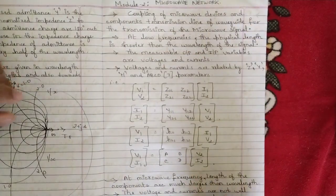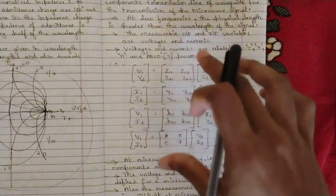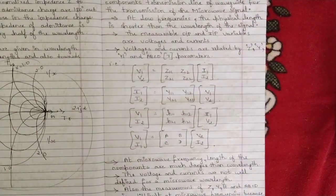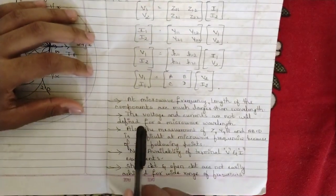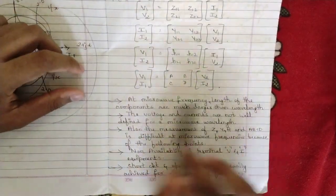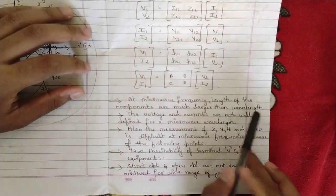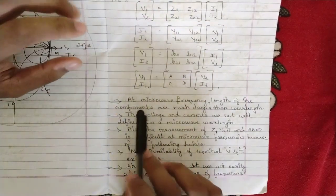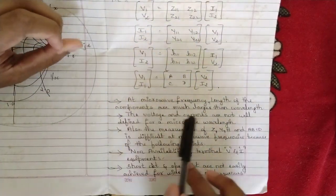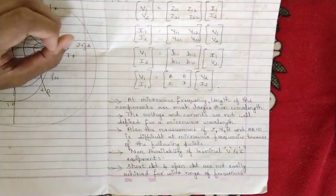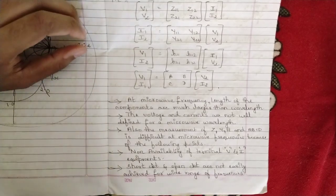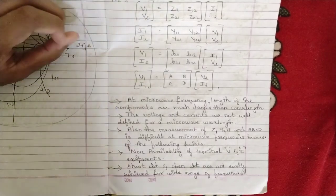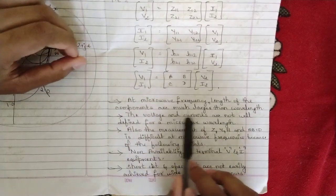This was just a brush-up; we are not going to use these directly in the upcoming concepts. At microwave frequency, the length of the components is much larger than the wavelength generated by that microwave, so the component lengths become very large at the microwave stage. As a result, voltages and currents are not well defined at microwave wavelengths.